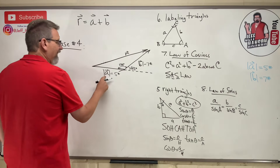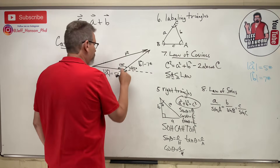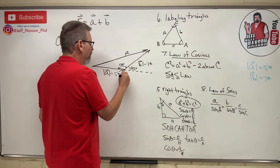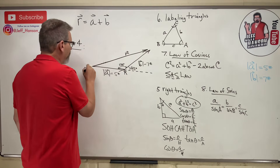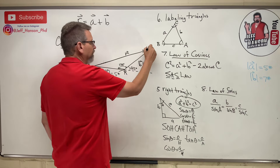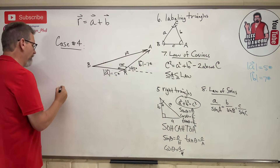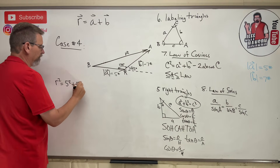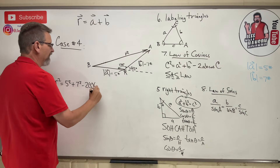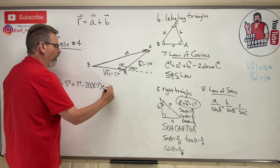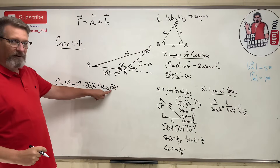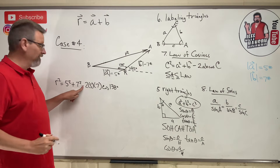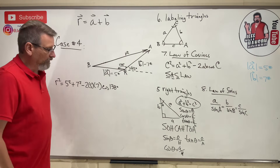In our triangle, the sides are A, B, and R, so: R squared equals A squared plus B squared minus 2AB cosine of 138°. Note that cosine of an angle greater than 90° is negative, so the negative times negative gives a positive. Plugging in: cosine(138°) times 35 times negative 2 gives 52.02, plus 25 plus 49 equals 126.02. Taking the square root gives vector R approximately 11.23.